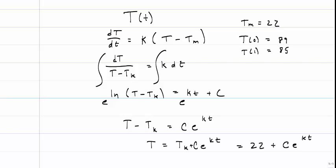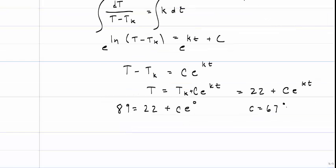And I'll plug in my value for Tm. So before I find K, I'm going to first have to find my constant C. I'll use my initial condition for that just like I've done in the past, and we'll find that C is equal to 67.